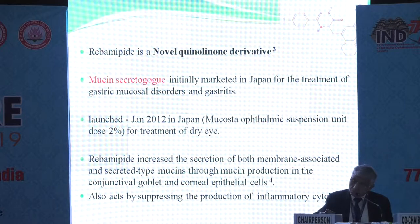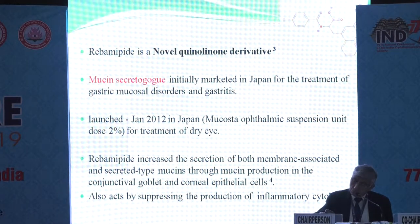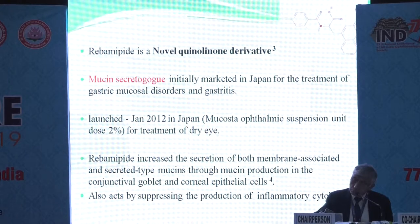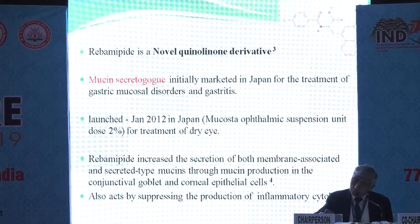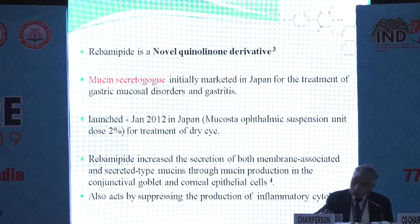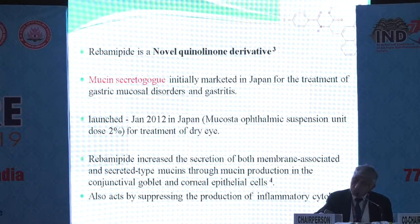It increases the expression of both membrane-associated and secreted type mucins through mucin production in the conjunctival goblet cells and corneal epithelial cells. It also acts by suppressing the production of inflammatory cytokines, which is one of the etiological factors in dry eye syndrome.